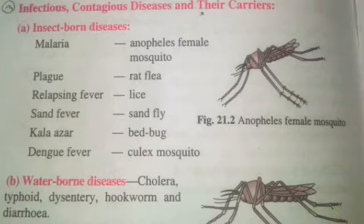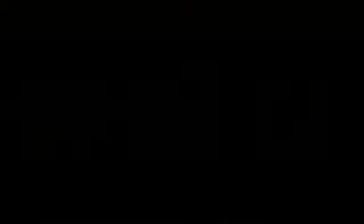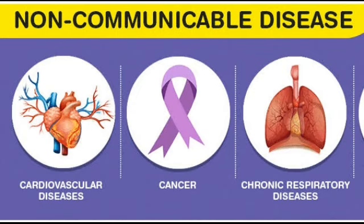The next one is waterborne diseases — that is cholera, typhoid, dysentery, hookworm, and diarrhea. The larvae of all these disease-causing organisms are present in the water. They contaminate the water, and through water they reach inside the patient. So write it down: cholera, typhoid, dysentery, hookworm, and diarrhea are diseases which are spread through water.